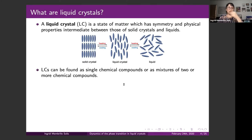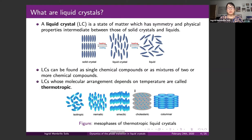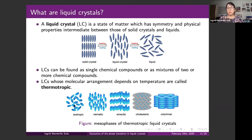Liquid crystals can be found as a single chemical compound or as a mixture of two or more compounds. When the molecular arrangement depends on temperature, we say it's a thermotropic liquid crystal. They can present different degrees of order: the four thermotropic liquid crystal mesophases are nematic, smectic, cholesteric, and columnar. If we heat the liquid crystal, all its special properties vanish and it behaves like a liquid — that state is called the isotropic state.